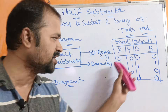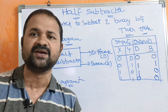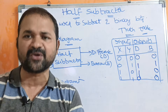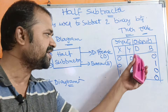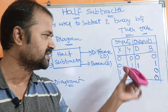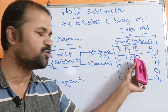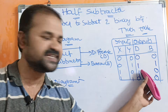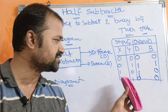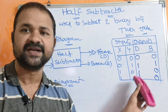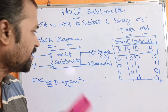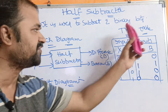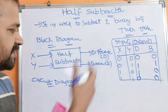The key combination to focus on is 0 minus 1, where Difference is 1 and Borrow is 1. The remaining three are direct calculations: 0 minus 0 gives Difference 0 and Borrow 0; 1 minus 0 gives Difference 1 and Borrow 0; 1 minus 1 gives Difference 0 and Borrow 0. Now we have to draw the circuit diagram for the half subtractor.